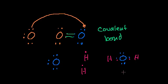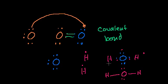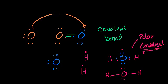Another way we could have drawn this is with lines, where each line represents two electrons — these are equivalent statements. But in this situation, oxygen is more electronegative than hydrogen — it wants the electrons more. So the electrons are going to spend more time around oxygen than around hydrogen. Hydrogen will experience a partial positive charge on its side of the molecule, while the oxygen side will experience a partial negative. This is called a polar covalent bond — it's still covalent because we're sharing electrons, but polar because the electrons are pulled to spend most of their time on one side.